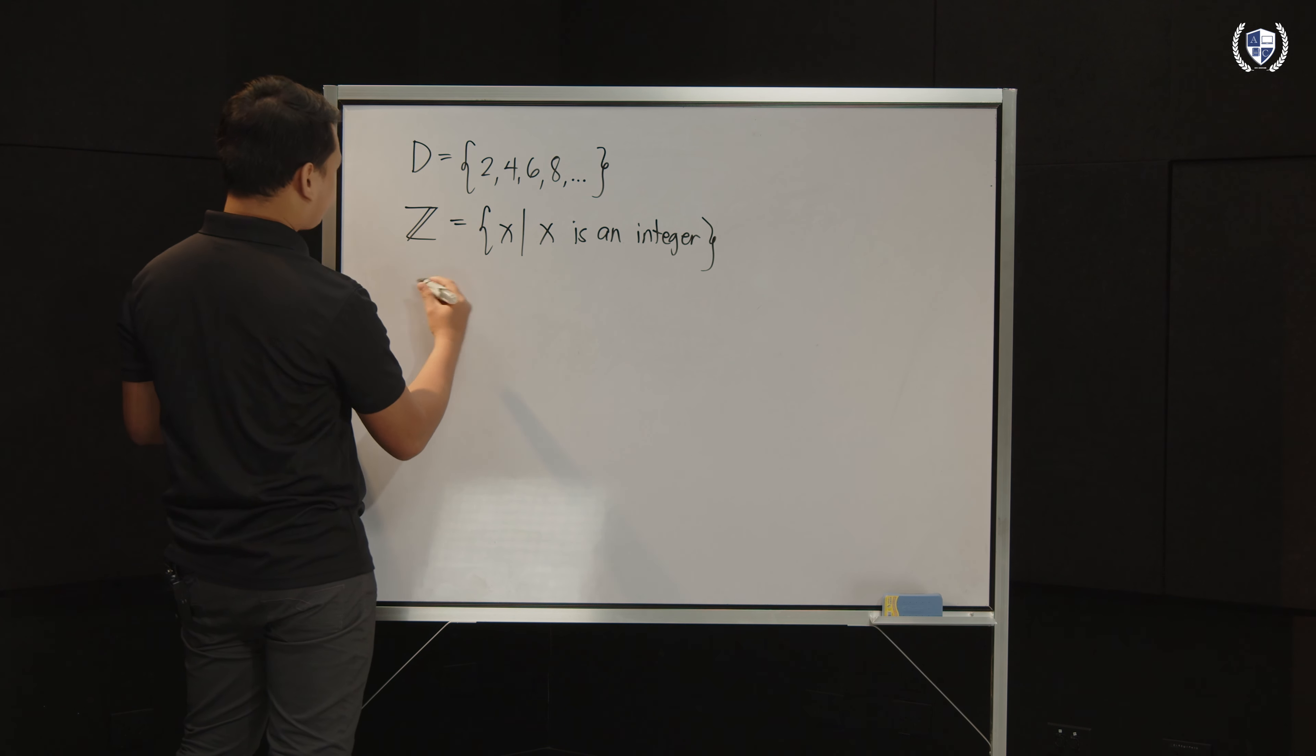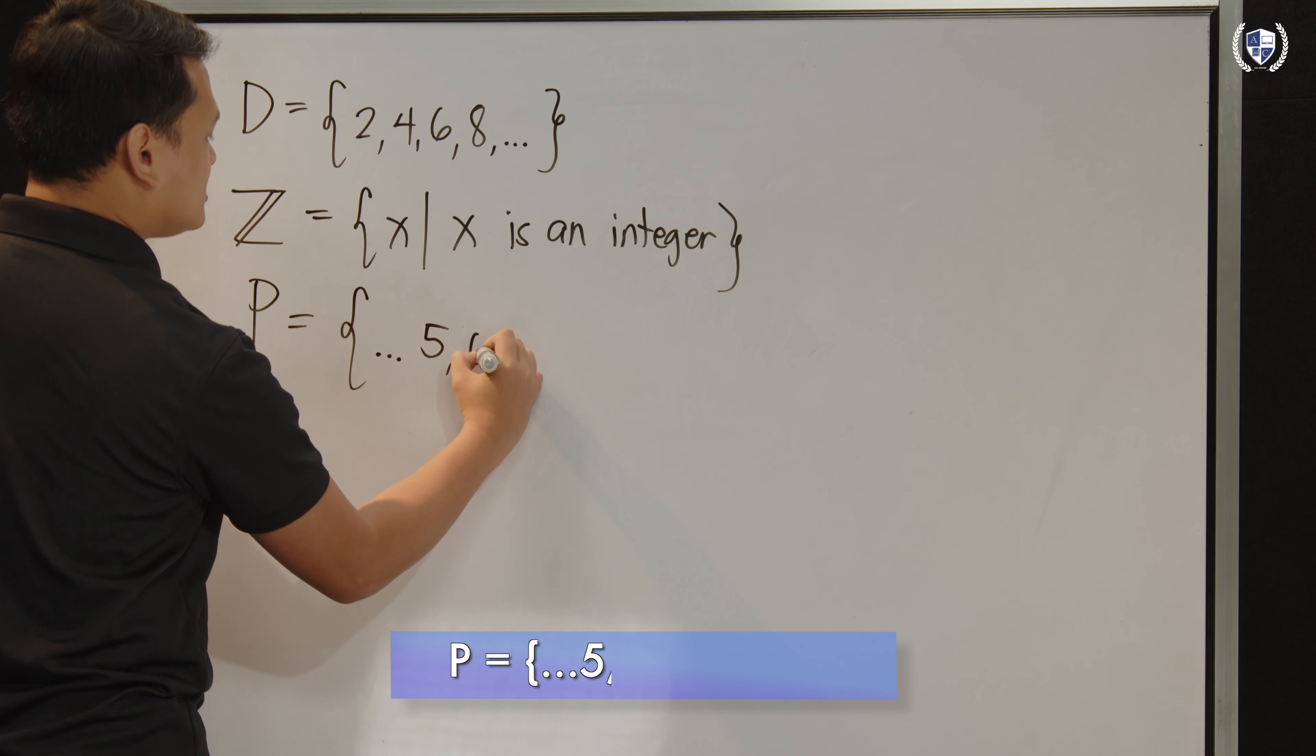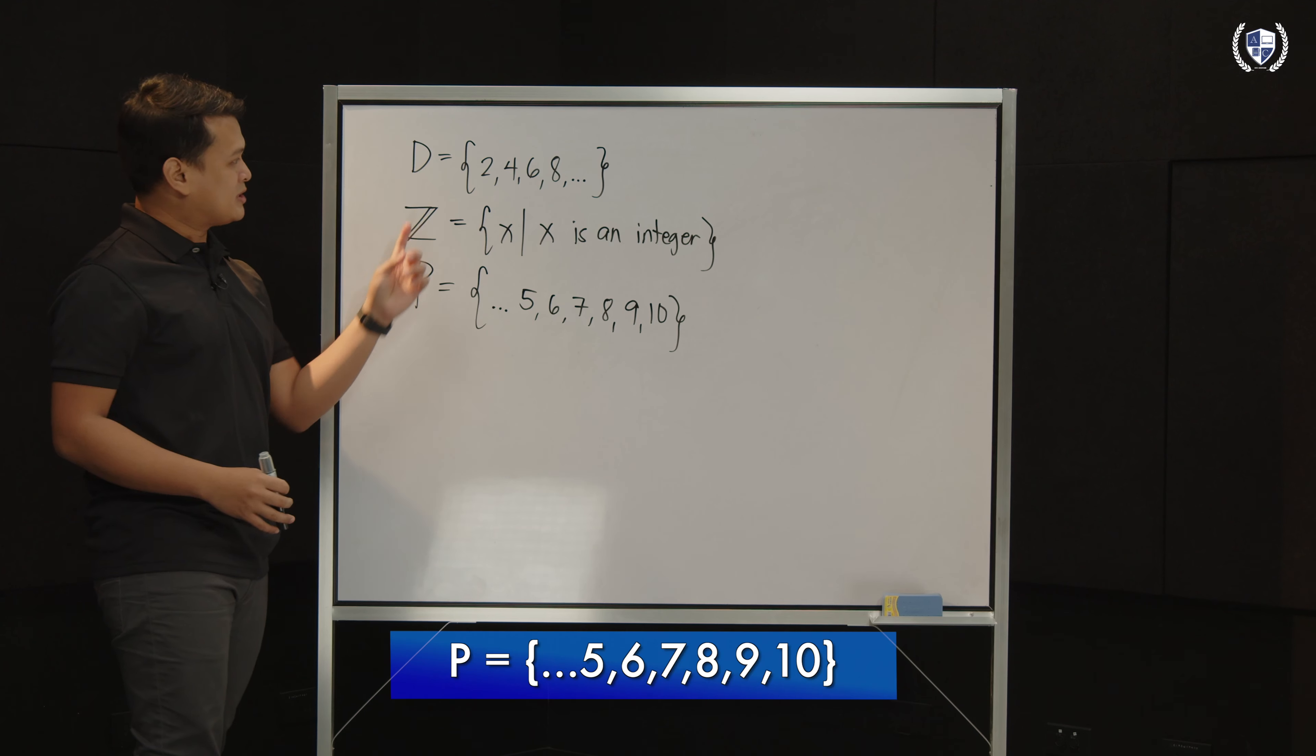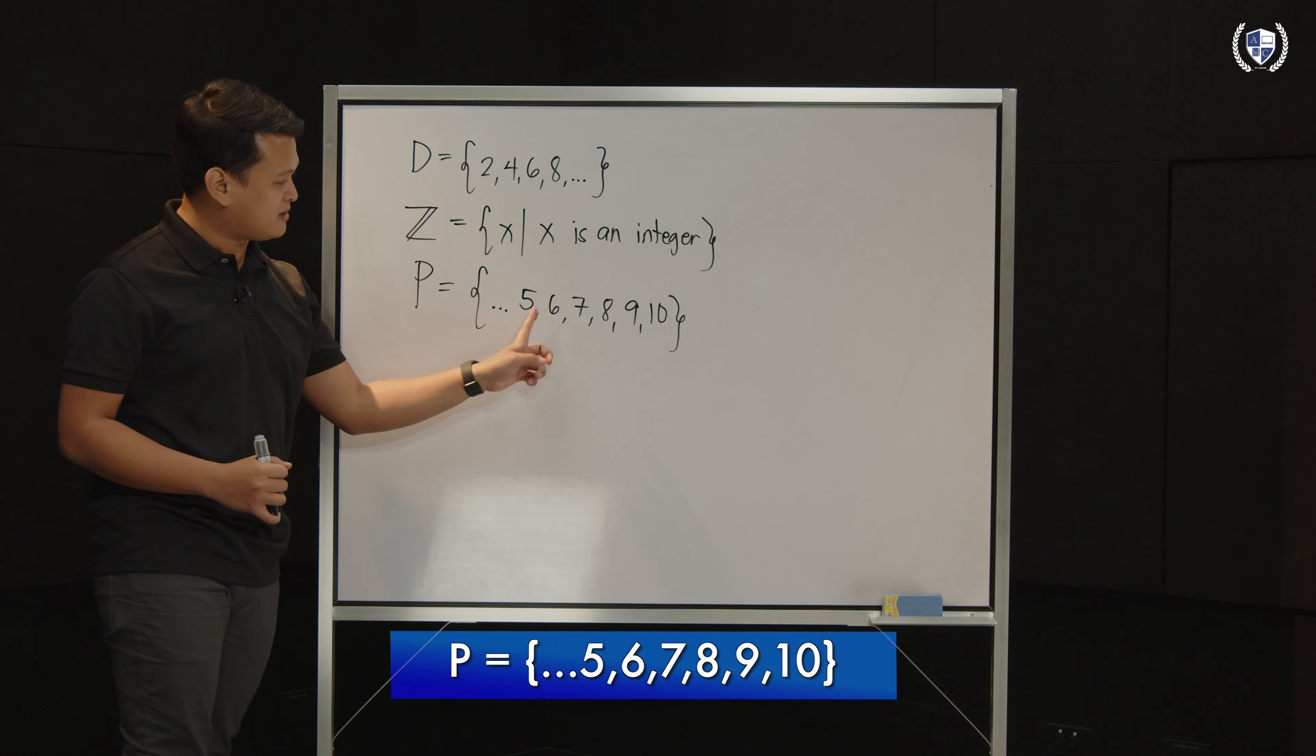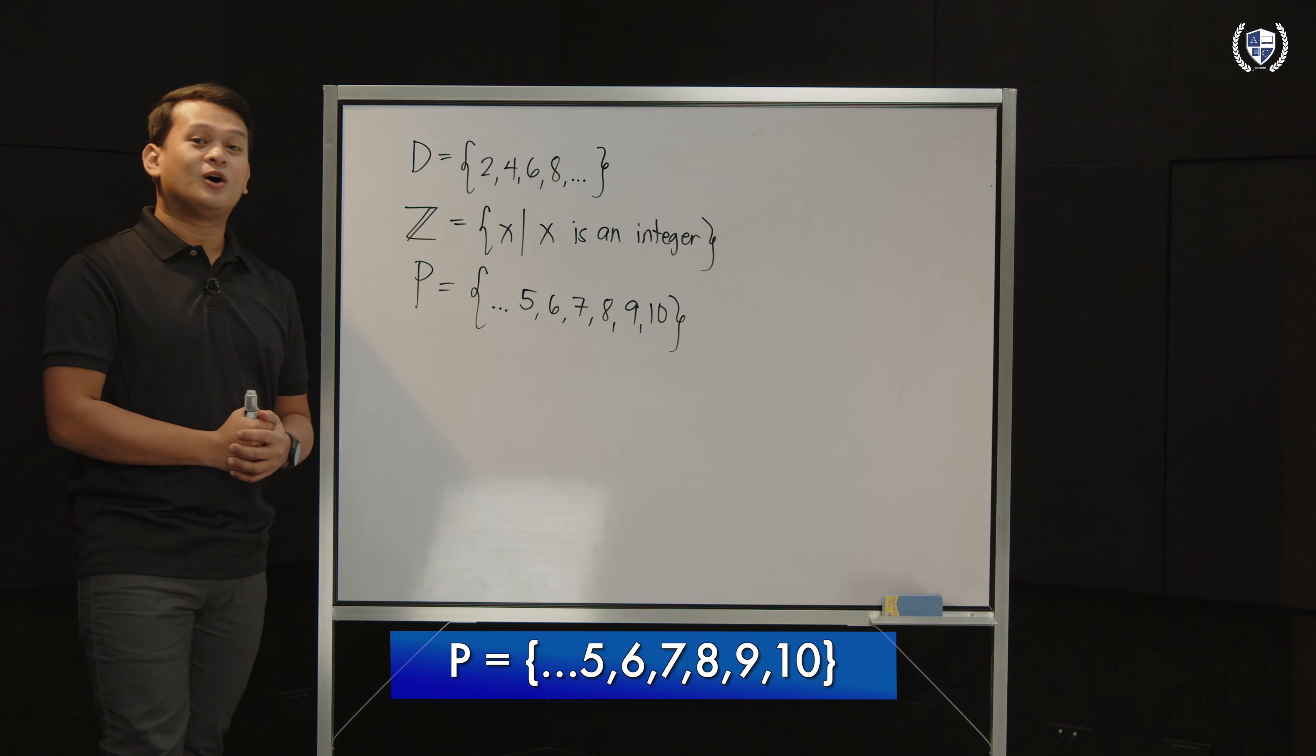And, another one would be, let's say, set P. This set is the set containing 5, 6, 7, 8, 9, and 10. So, ito kabaliktaran nung pagsulat kagaya kay set letter D. Dito naman, meron kang ellipses and then 5, 6, 7, 8, 9, and 10. Is this still an infinite set? Oo, kasi, yung mga numbers less than 5 ay kasama pa rin sa set na to. Kasi nga, gumamit pa rin siya ng tatlong tuldok na to. So, therefore, this is also an example of an infinite set.